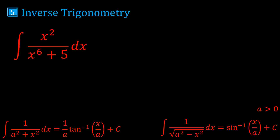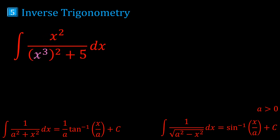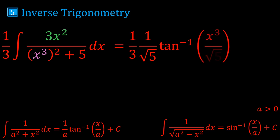Next we have x² over (x⁶ + 5). Looking at the denominator's derivative, which is 6x⁵, the numerator isn't close — so maybe it's an inverse tan instead. We write x⁶ as (x³)². The derivative of x³ is 3x², which is close to the numerator x². We multiply and divide by 3, giving the answer: 1/3 · (1/√5) · arctan(x³/√5).